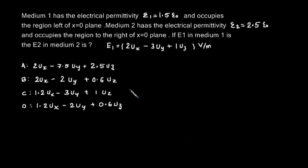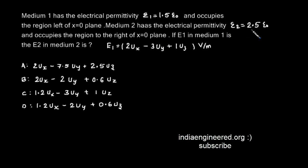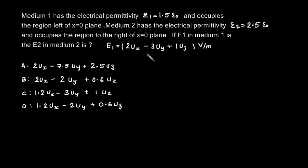This question was asked in GATE Electronics and Communication 2003. Medium 1 has electrical permittivity equal to 1.5 epsilon naught and occupies the region left of the x=0 plane. Medium 2 has electrical permittivity epsilon 2 equal to 2.5 epsilon naught and occupies the region to the right of the x=0 plane. If the given electric field is in medium 1, we are asked to find out what is the electric field in medium 2.